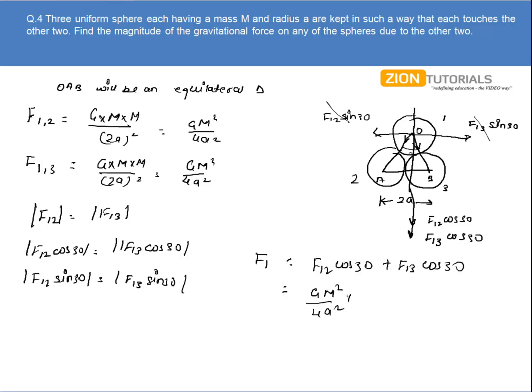This equals twice F12 cos of 30, which equals GM square by 4A square times root 3 over 2.